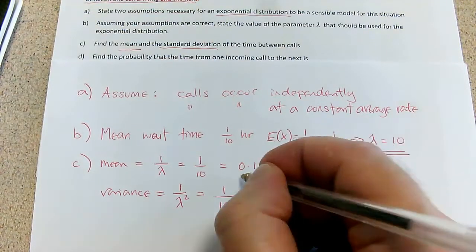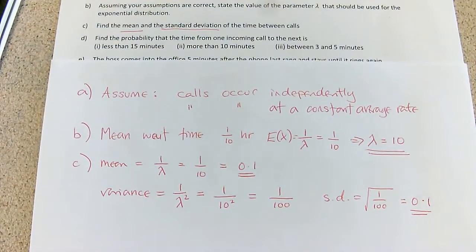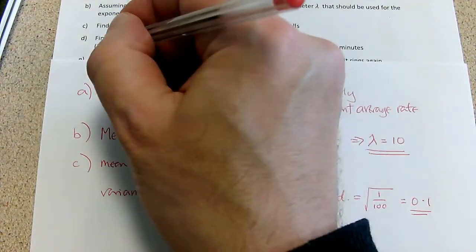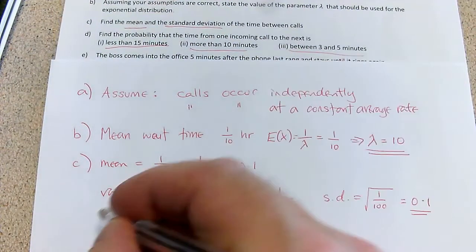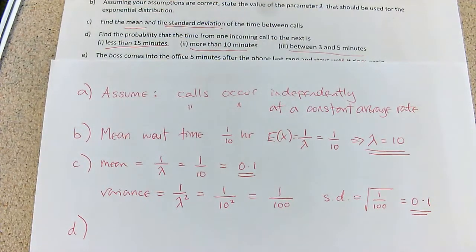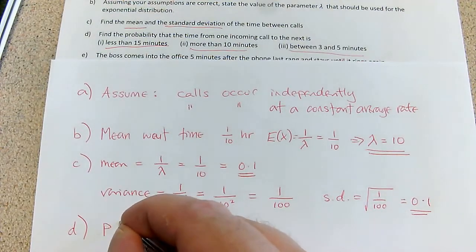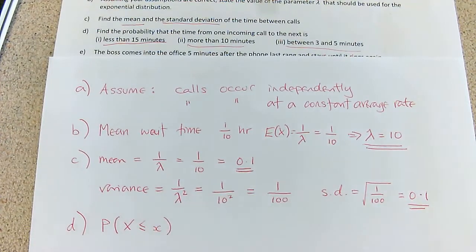I've done part C, with two good answers for the mean and standard deviation. Now I've got to find some probabilities in part D: the probability of being less than 15 minutes, more than 10 minutes, and between 3 and 5 minutes. We can visualise these as areas, but unlike the rectangular distribution, it's not just the area of an easy shape, so we need the formula for probability of X being less than or equal to a particular value.